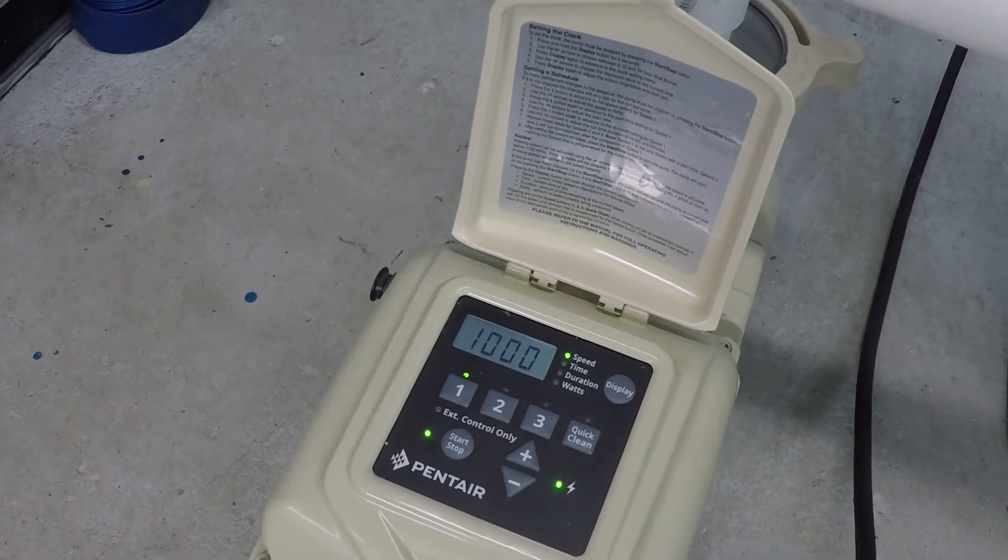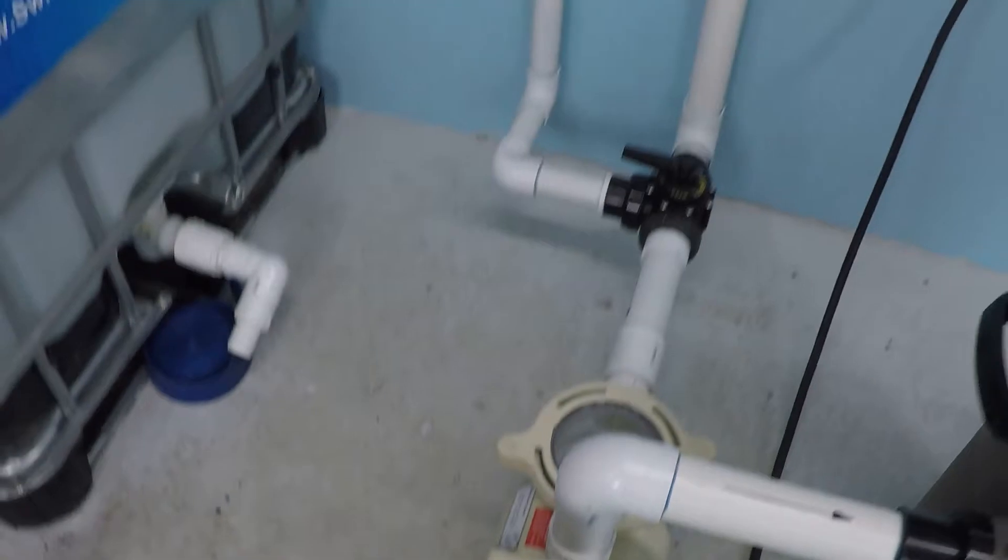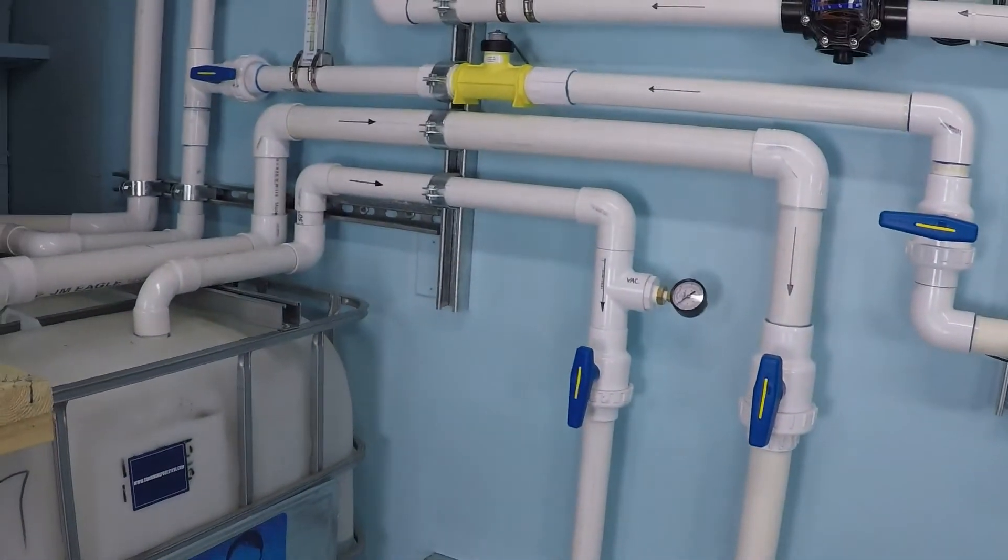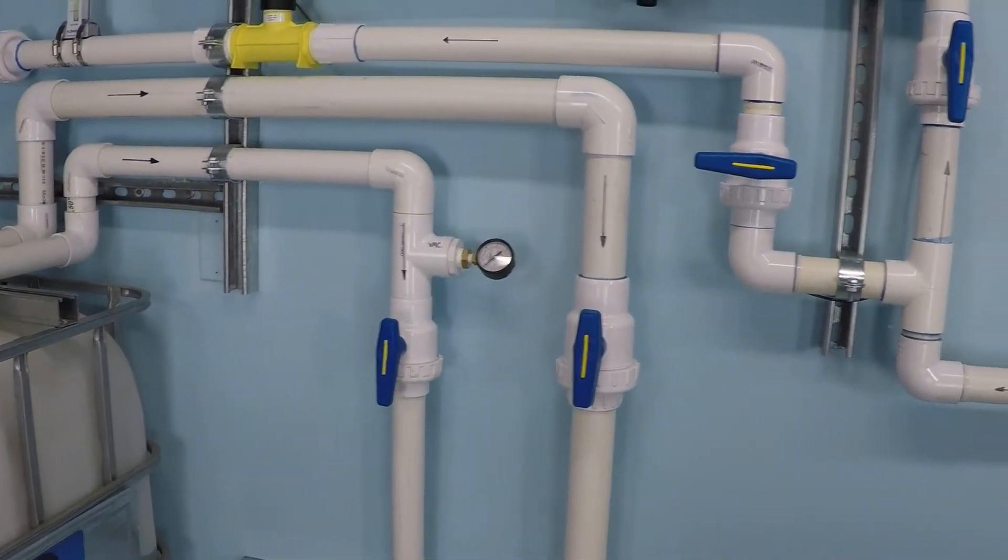Here I have a Pentair Superflow variable speed pump operating at 1000 RPM. The system is currently running on two suction lines, an inch and a half and a two inch suction line.